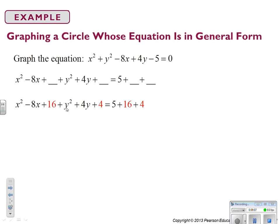Now that we have a complete square for the x and the y, we're going to rewrite them. x squared minus 8x plus 16 is (x - 4)². y squared plus 4y plus 4 is (y + 2)². And 5 plus 16 plus 4 is 25. Yay! So now all we have to do is graph. Center is at (4, -2). Radius is 5.